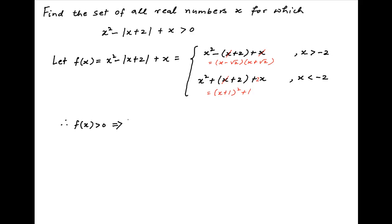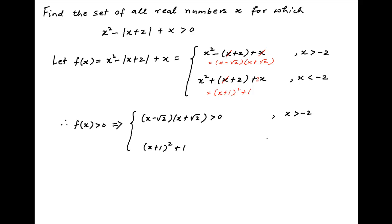Therefore, f(x) is greater than 0 — which is the given inequality — implies that x minus root 2 times x plus root 2 is positive when x is greater than minus 2. And x plus 1 whole square plus 1 is greater than 0 in the second case.